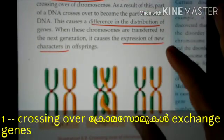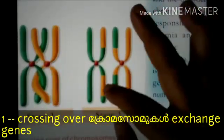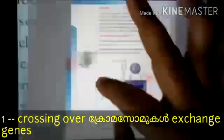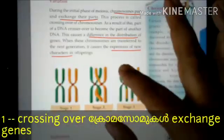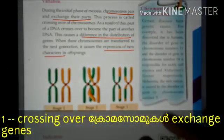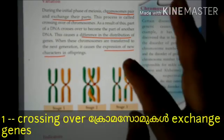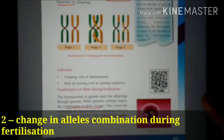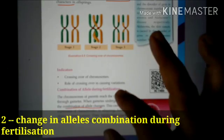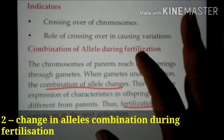We always have two chromosomes exchanging in the same way. We call the result a new character. The variation is the combination of allele changes.